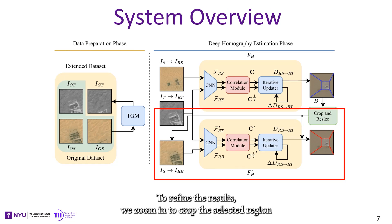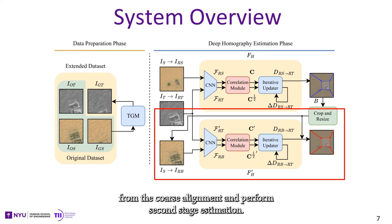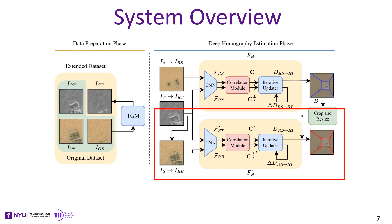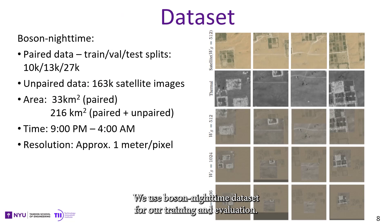To refine the results, we zoom in to crop the selected region from the coarse alignment and perform second-stage estimation. The final predictions are indicated using red arrows. We use both daytime and nighttime datasets for our training and evaluation.